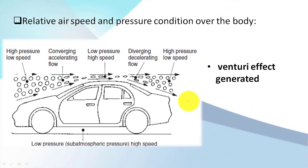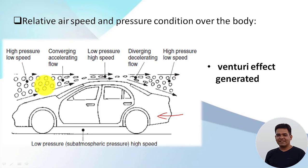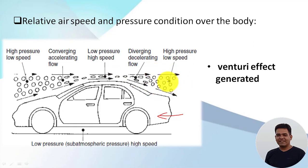Now, relative airspeed and the pressure condition over the body. This phenomenon can be understood with the help of this figure, where we consider a sedan car moving in one direction and air as a stationary element. While doing wind tunnel testing to estimate the pressure distribution, we consider the vehicle as stationary and blow air at a certain velocity over the body.